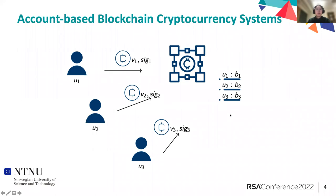I will start with a short introduction for the account-based blockchain cryptocurrency systems. This model is used by Ethereum, where users send transactions to the blockchain. The blockchain computes each user's balances based on these transactions and records each user's balances on the blockchain. Our work focuses on the account-based blockchain model.